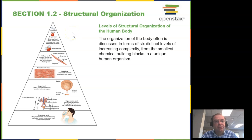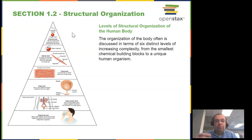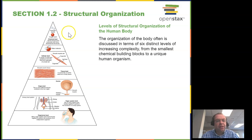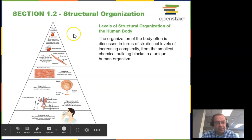This is section 1.2: Structural Organization. Human beings, as well as all organisms, are structured from small to large — or large to small, however you want to look at it. In this diagram, we see that at the very top are hydrogen atoms, and at the very bottom is the organism. So atoms in general have